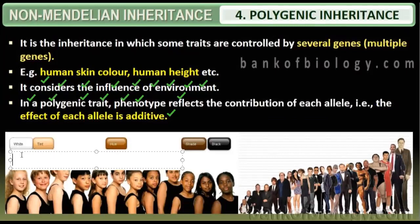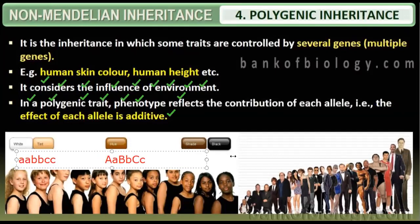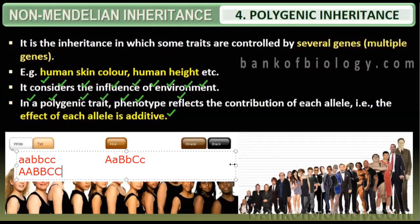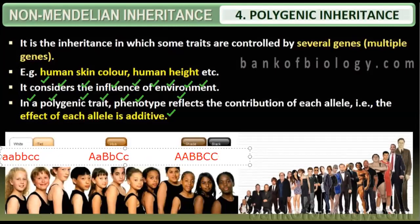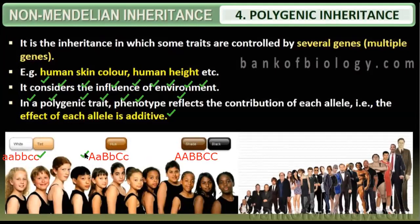The white color comes from purely recessive genes, while the black color comes from dominant genes. You can see that the effect of each allele is additive — with no dominant alleles the color is white, with some dominants it shifts to medium color, and when all dominant alleles are present the color is purely dark.